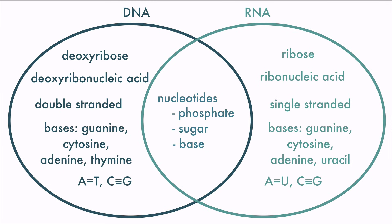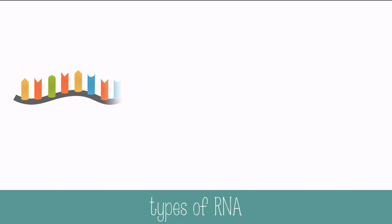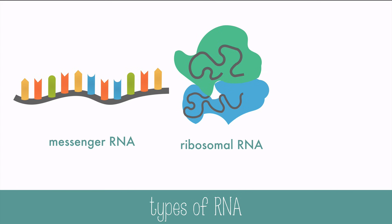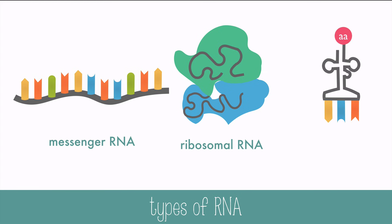DNA is also actually incredibly long, but RNA is comparatively short. There are also three different types of RNA. There's messenger RNA, which is used to make a copy of DNA and then can go out of the nucleus. There's ribosomal RNA, which makes up a structural component of ribosomes. And there's transfer RNA, which will bring the correct amino acid in sequence when creating proteins.